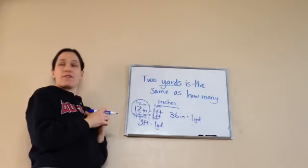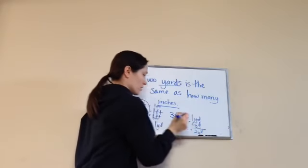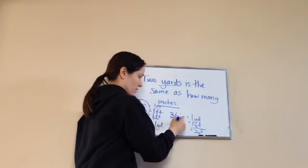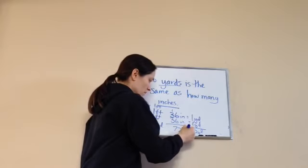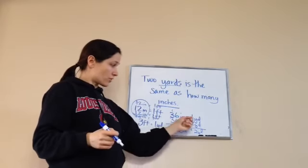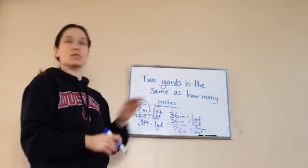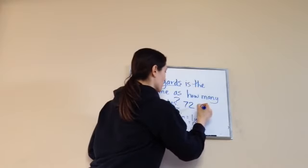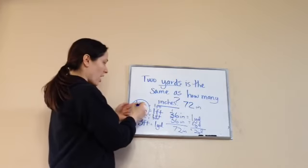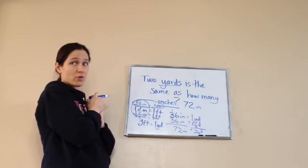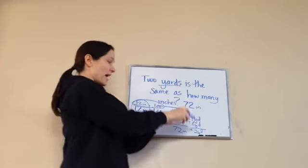Now, how many yards do I have? Two. So if I add another yard, I get 72 inches total. So 72 inches equals two yards. Two yards is the same as 72 inches. We used knowledge we did have — even though the chart didn't show it directly — to figure out what we needed.